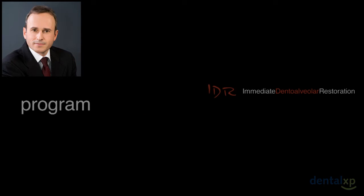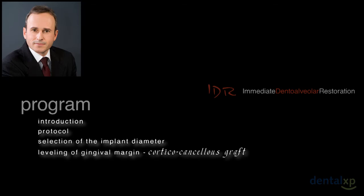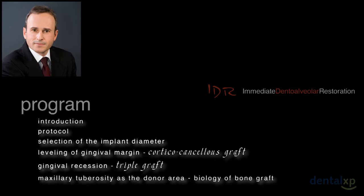This is the program for my lecture. I will give a short introduction and discuss the protocol, how we select the implant diameter, regardless of whether we have compromised or intact sockets. I will show indications of the technique: leveling of gingival margin using cortical cancellous graft, cases with gingival recession requiring a triple graft to restore hard and soft tissue, and why we select the maxillary tuberosity as the main donor area.